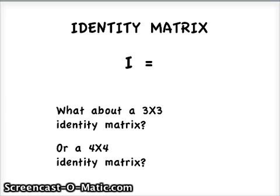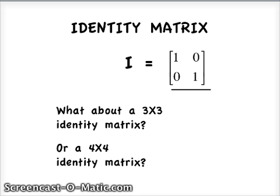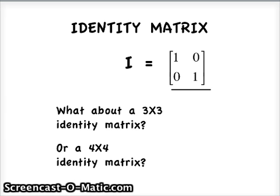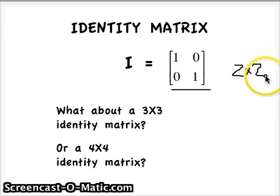What we've discovered is a really unique thing called the identity matrix. So for a two by two, this is the identity matrix. Just like you can multiply any number by one and get that same number — three times one equals three — you can do the same thing with the identity matrix and other matrices. A matrix times its identity matrix is going to be itself, just like we saw in that previous example.